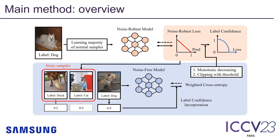This is an overview of our method. Our method consists of two models: a noise-robust model and a noise-free model. Briefly, the noise-robust model predicts a sample-wise label confidence. Then the noise-free model learns to classify samples using their label confidence. At the inference phase, only the noise-free model is used.